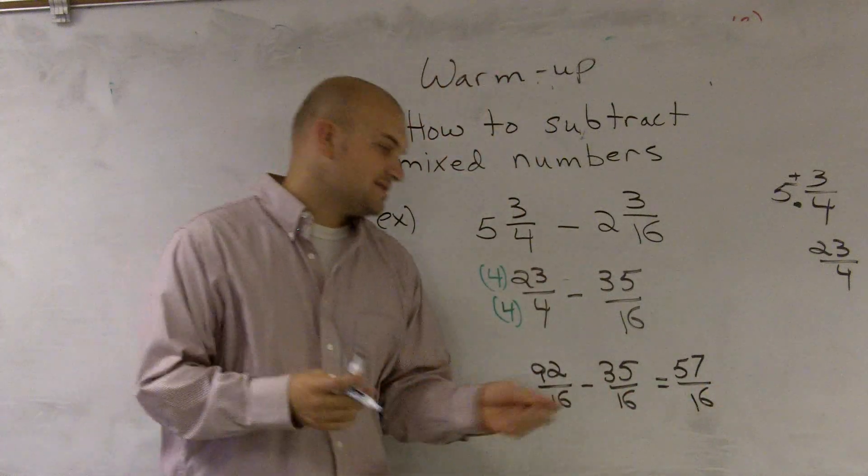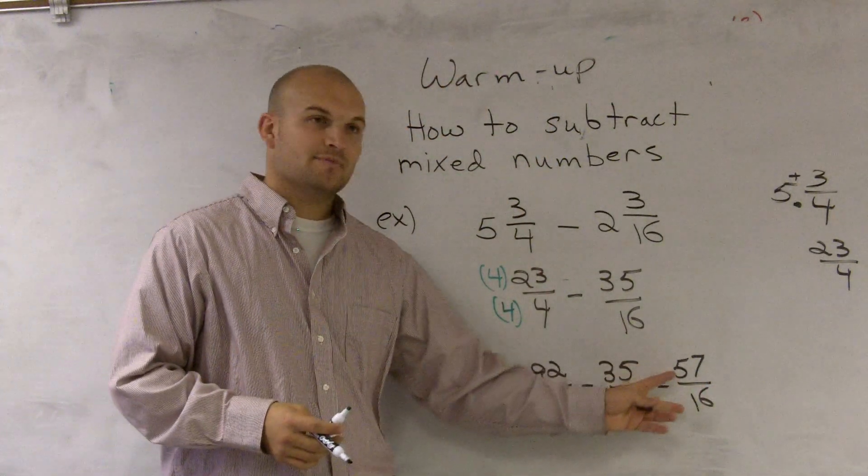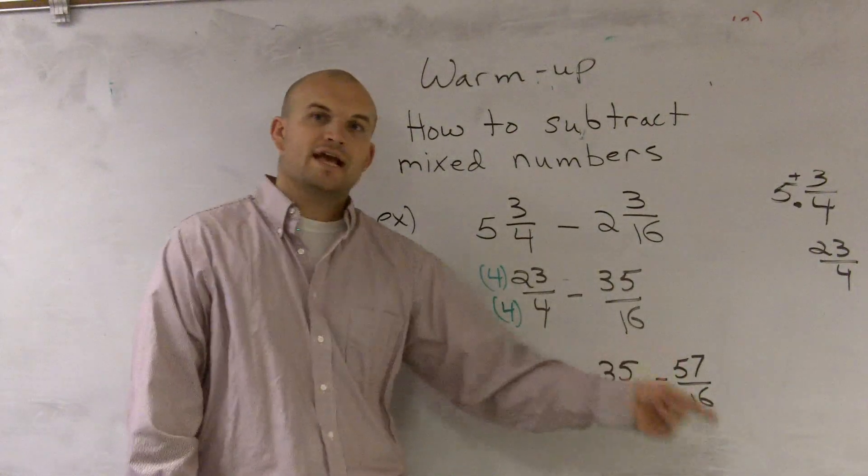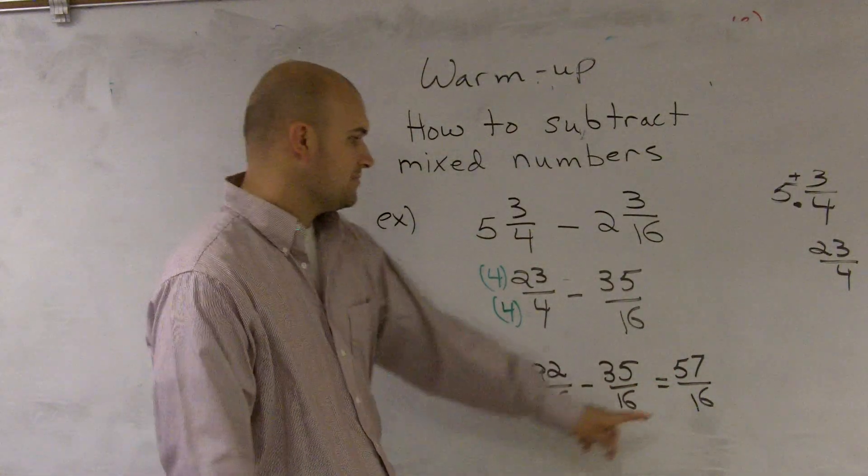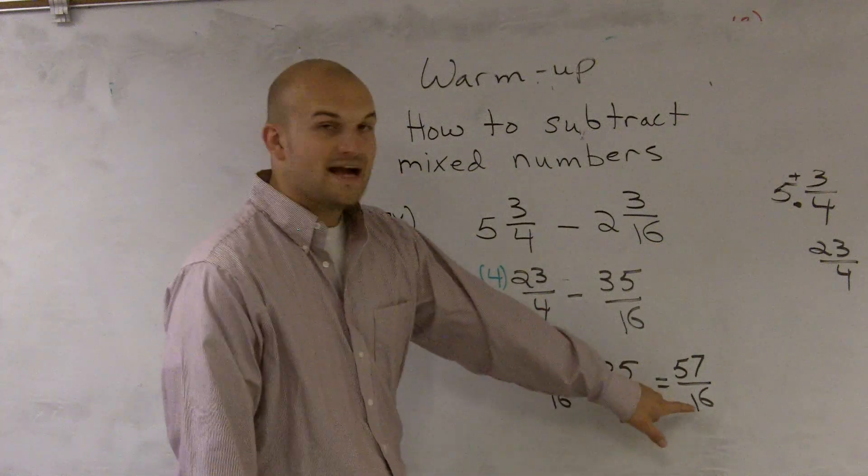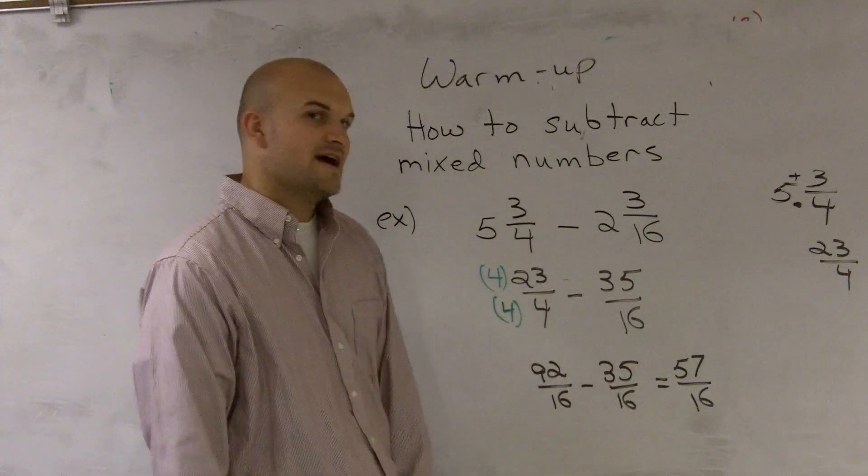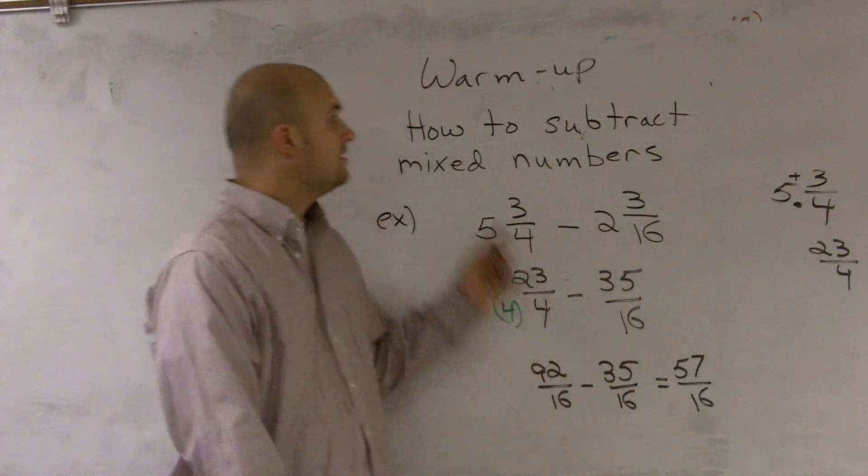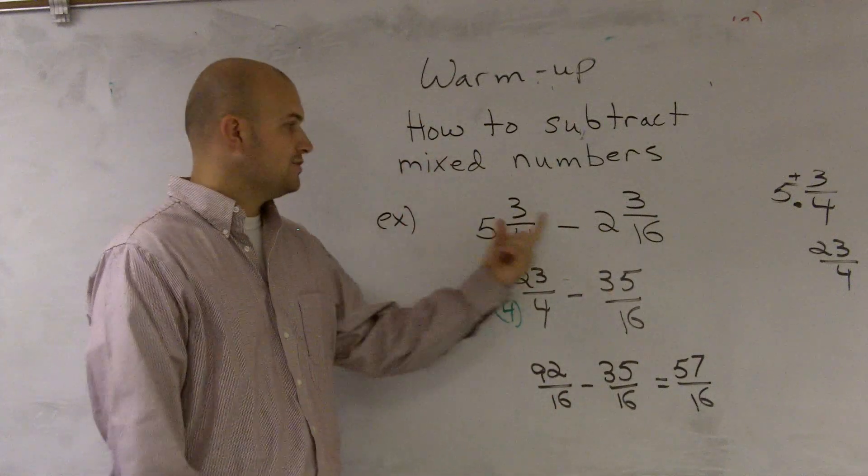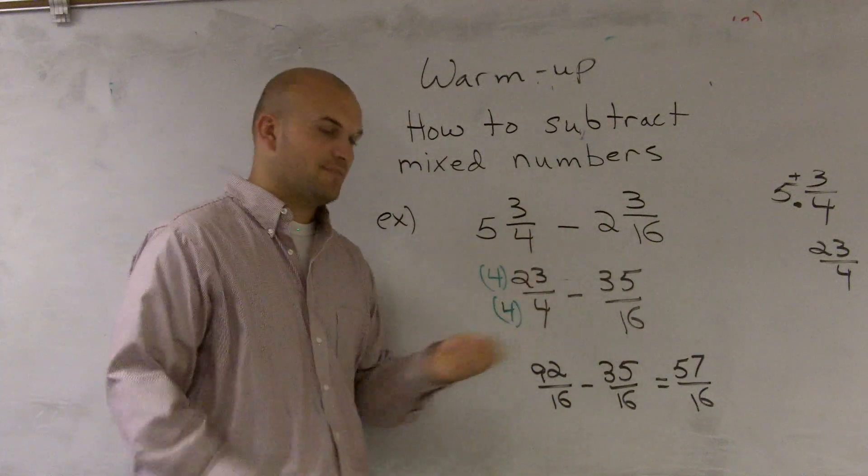My last step is I want to see if there's any number that I can simplify, that means goes into 57 and goes into 16. As I look at these numbers and the factors of 16, I notice none of the factors of 16 go into 57. Therefore, this is simplified. That is how you subtract mixed numbers when you convert both of your mixed numbers to improper fractions.